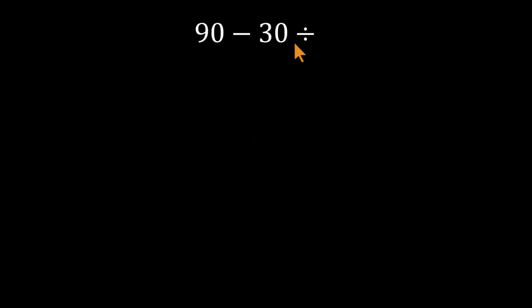90 minus 30 divided by 5. Looks straightforward, right? But this one manages to fool a lot of people.